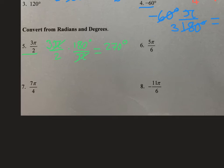For our next problem, we'll look at number 8. We have negative 11π divided by 6. We are converting from radians. So our π is on the bottom. And we are converting to degrees. So our 180 degrees is on top.